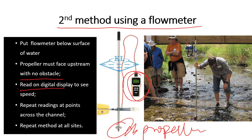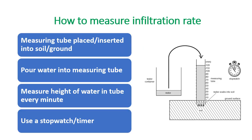Finally, here is how to measure infiltration rate. Infiltration is the movement of water from the surface into the soil. The instruments needed are water, a perforated measuring tube, soil, and a stopwatch. Insert the measuring tube into the soil, then pour water into it. Measure the height of the water in the tube every minute using your stopwatch to record the time it takes for the water to infiltrate into the soil. This gives you the infiltration rate.